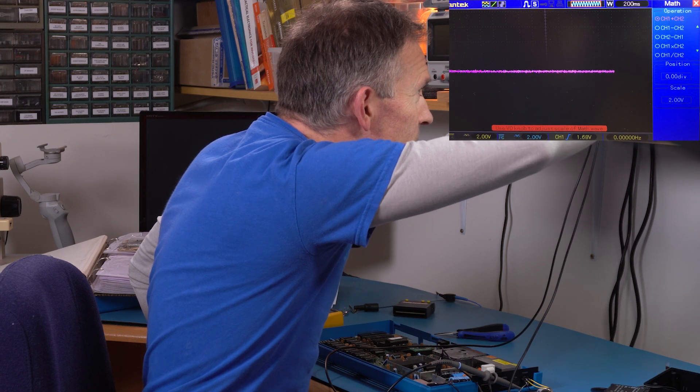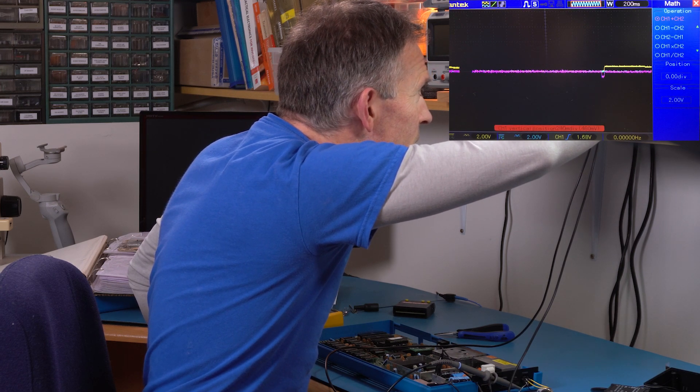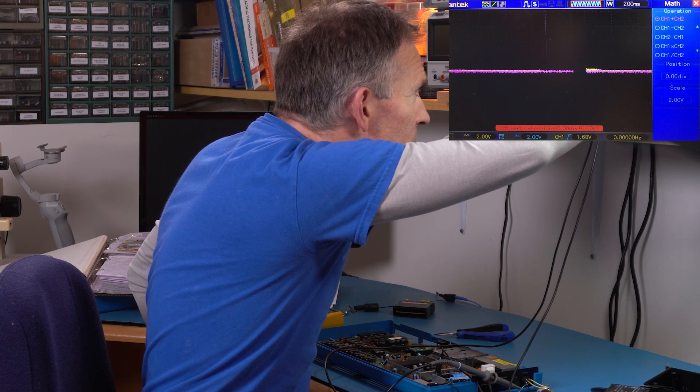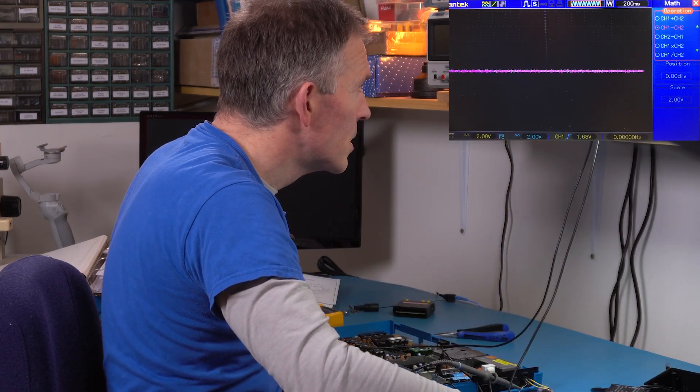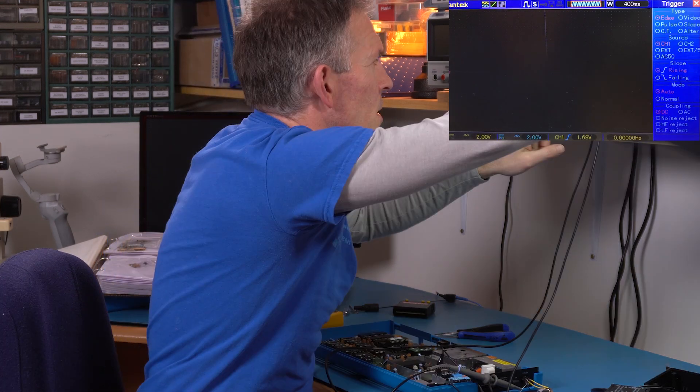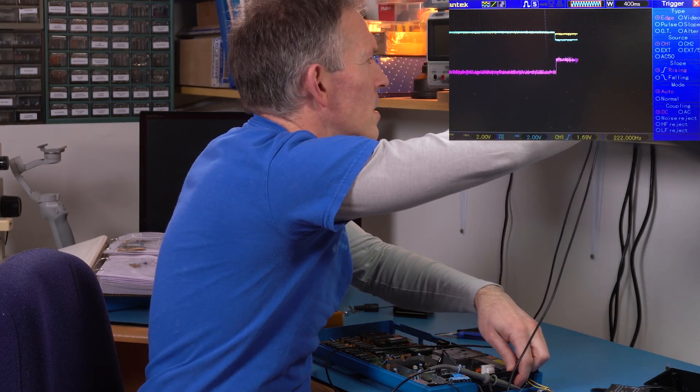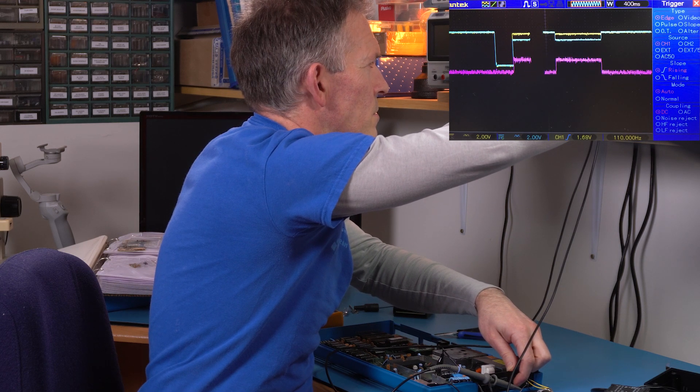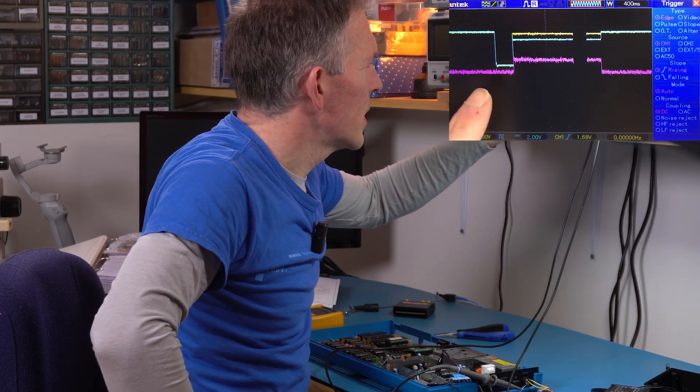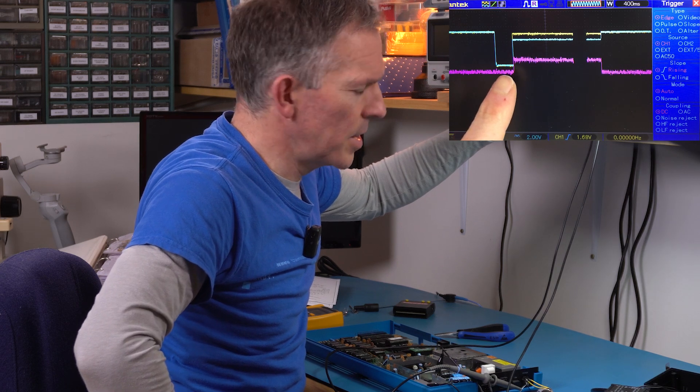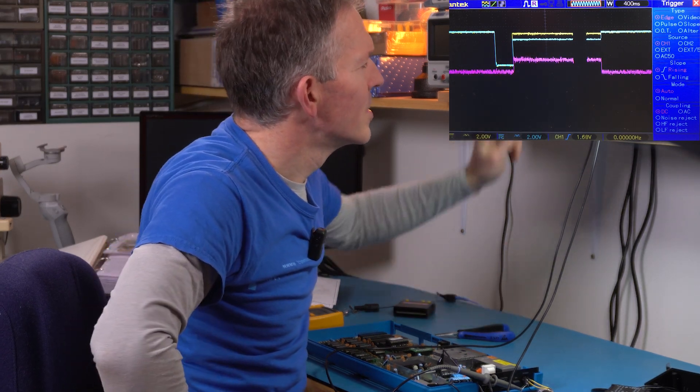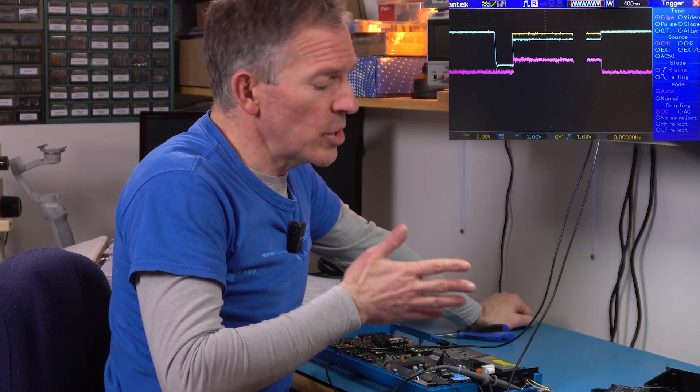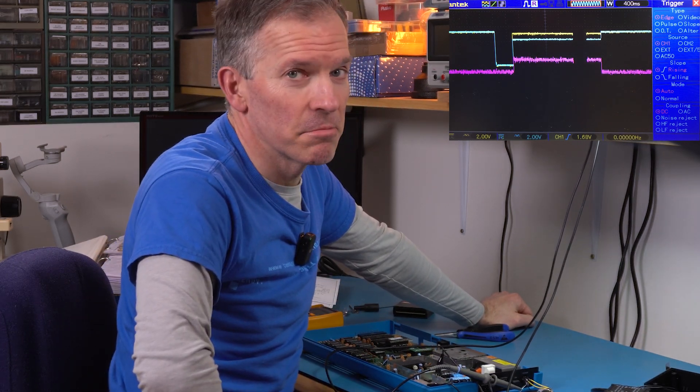So let's see if we can do the difference between the two of them. Math menu, we want one minus two, there we go. So we get to see all three of them. So that happened there, I turned it on. The input from the power supply was really low, but I never saw a huge difference in the voltage between the two, which means there wasn't a huge current spike through it.